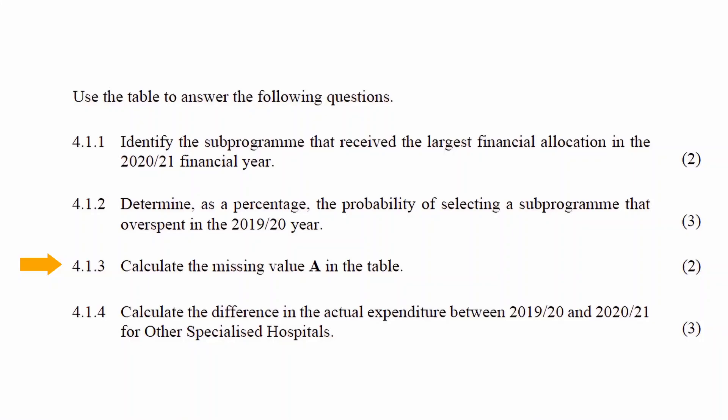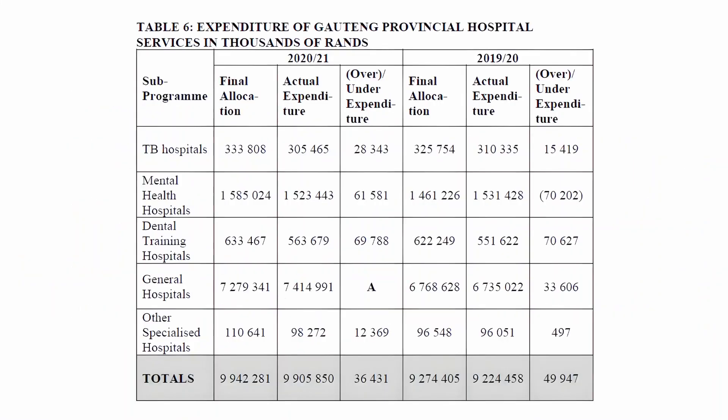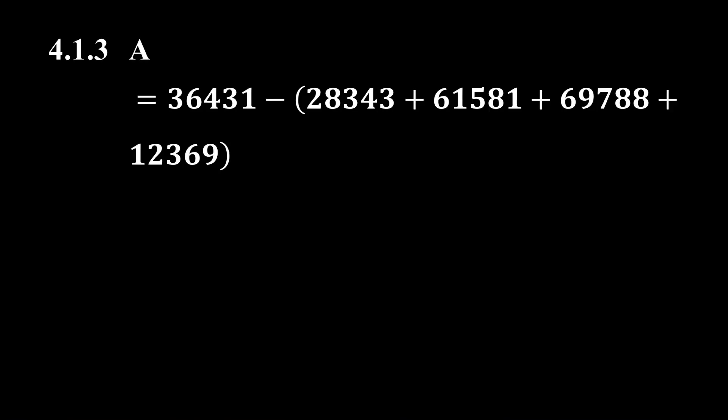In Question 4.1.3, you have to calculate the missing value A in the table. A is calculated by finding the difference between the total for the column of over or under expenditure for 2020-2021 of R36,431,000, and the sum of all the values in that column. A is then calculated to be negative R135,650,000.